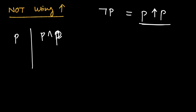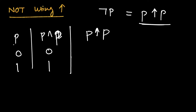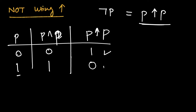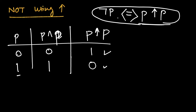Let's draw the truth table to verify. p can be either 0 or 1. When p is 0, p NAND p is 1; when p is 1, p NAND p is 0. So p NAND p is the same as NOT p. This is an important formula to keep in mind: we can implement NOT of anything by doing NAND with itself.